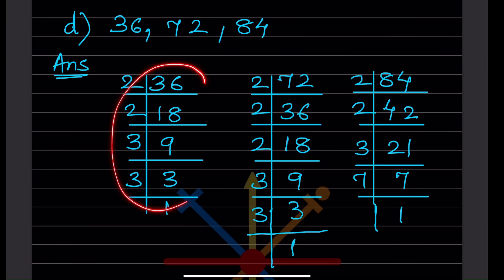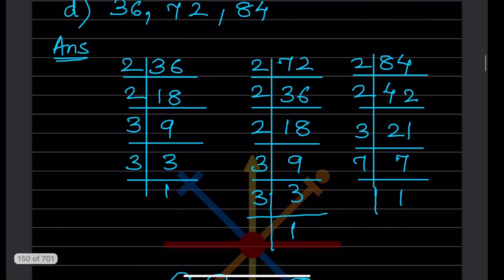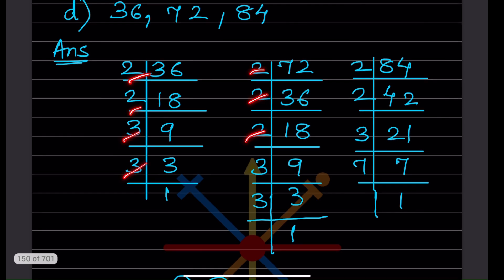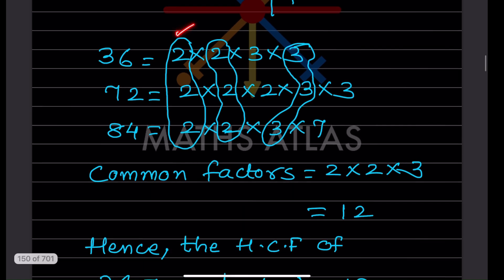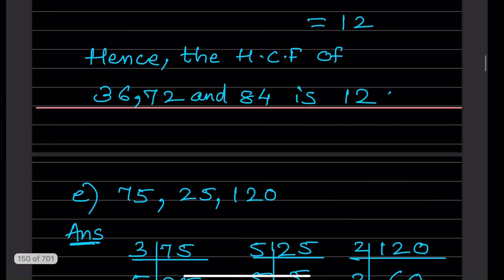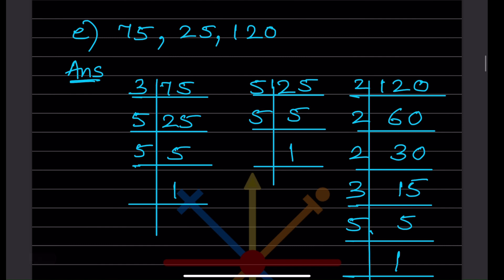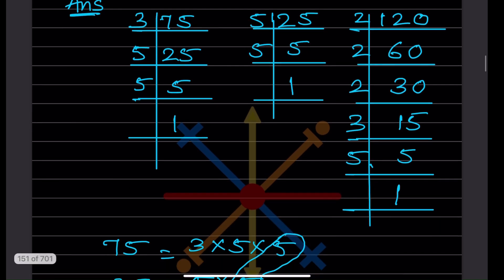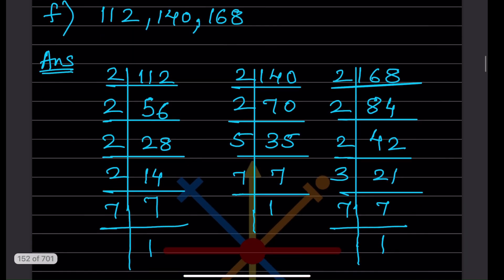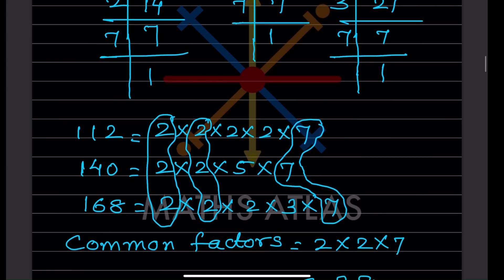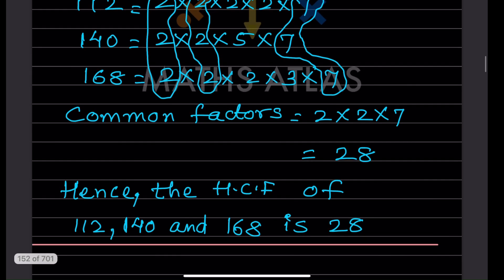For the next example, the common prime factor is 19, so the HCF is 19. For the three-number example, after writing the prime factors separately, the common ones are 2, 2, and 3. So 2 × 2 × 3 = 12, and the HCF is 12. For the next set, the common prime factors are 2, 2, and 7, giving 2 × 2 × 7 = 28. So the HCF is 28.